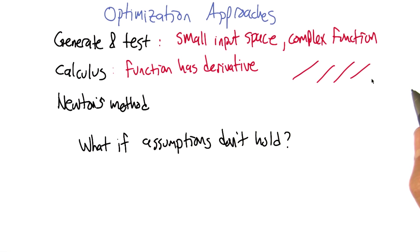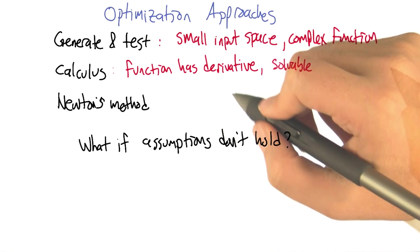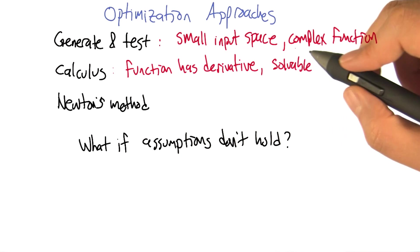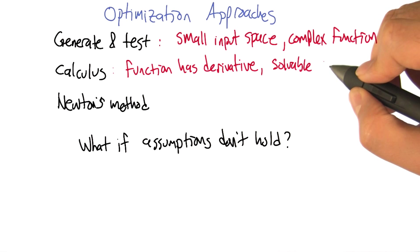Okay. Like if you just picked a random number, it wouldn't be at the jump. So it's not only important that the function has a derivative, but we need to be able to solve that derivative equal to zero.